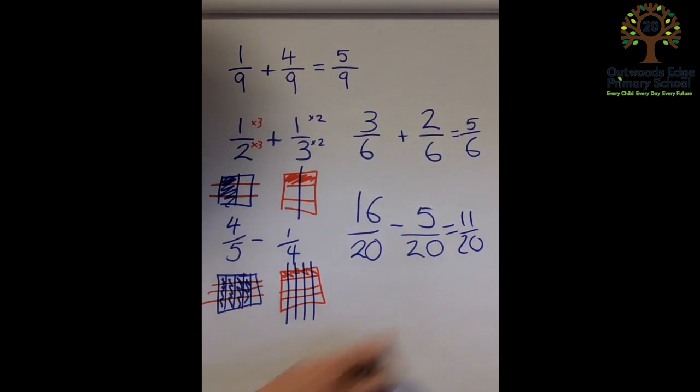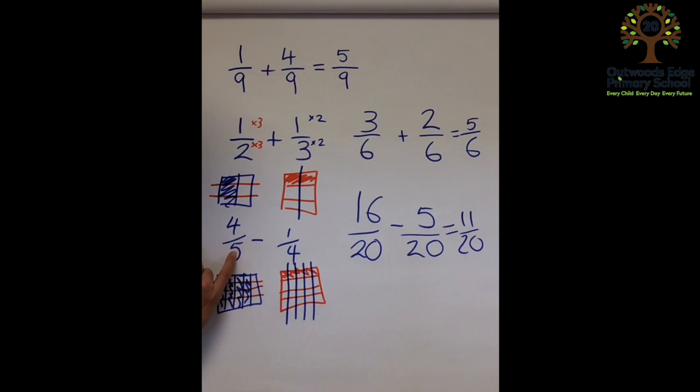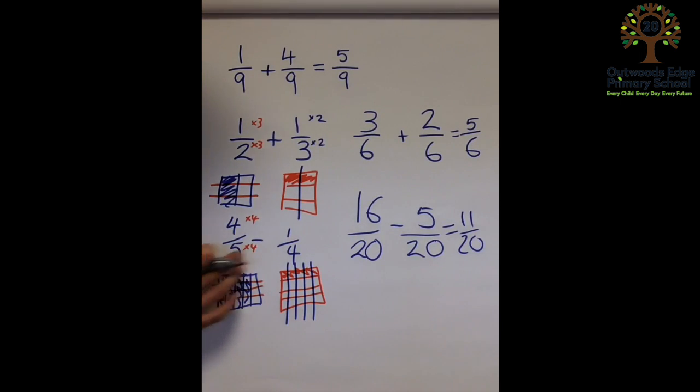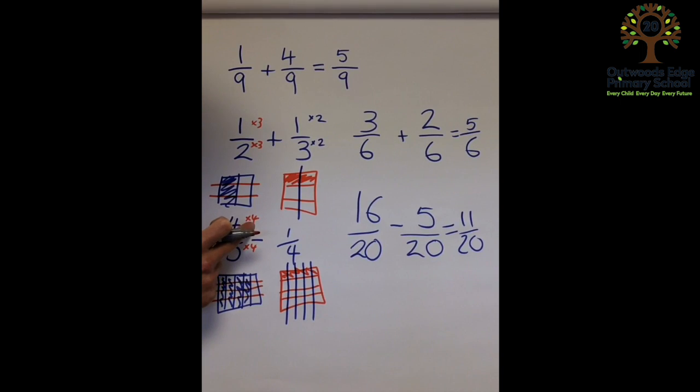Now, for those children becoming fluent with this, they can see that on this side, I've timesed by four, and I've timesed by four. Whatever I do to my bottom, I must do to the top. Five fours are twenty, four times four is sixteen.